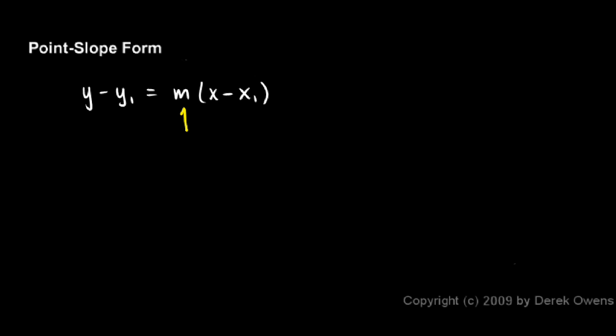In this equation, m is the slope. x and y are the variables. And x1 and y1 are numbers that represent the coordinates of a particular point, one specific point on the line.